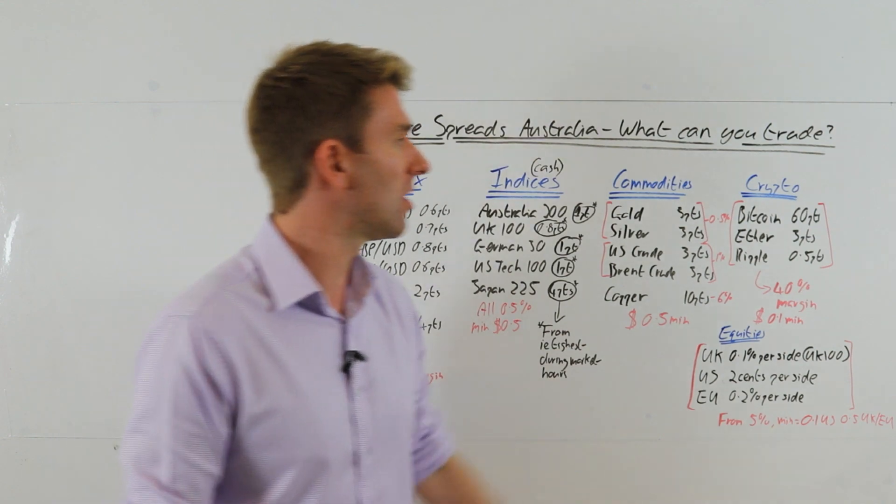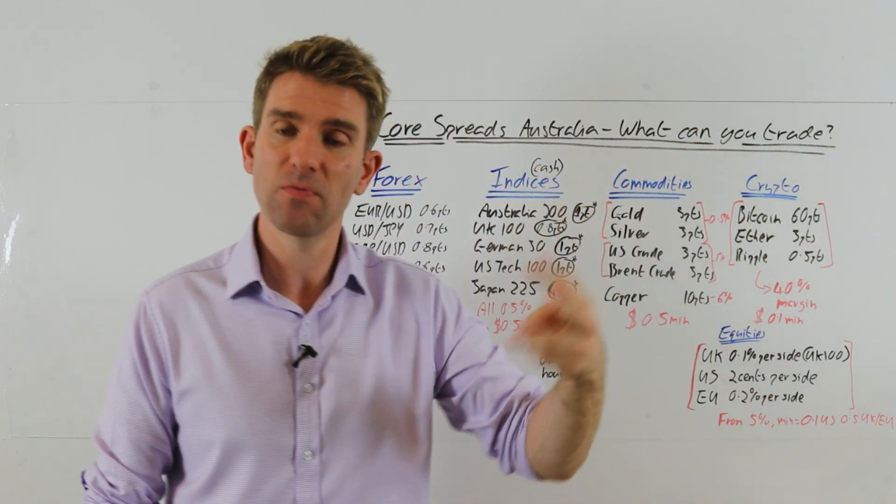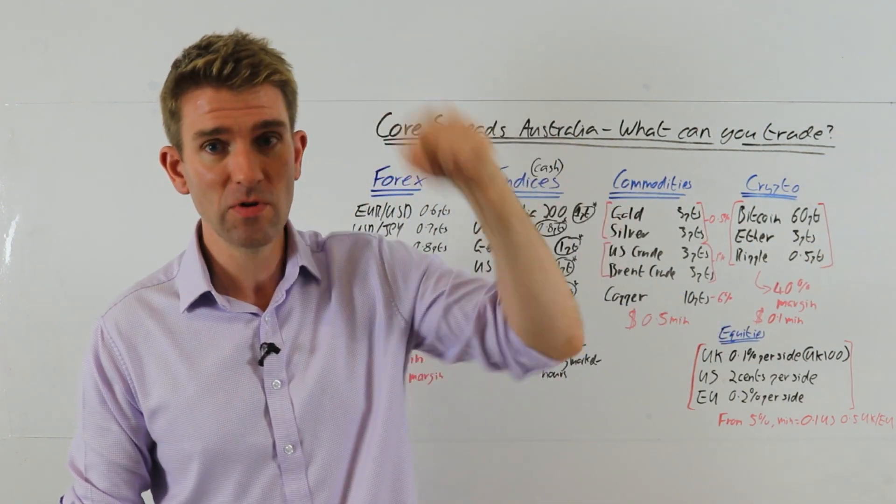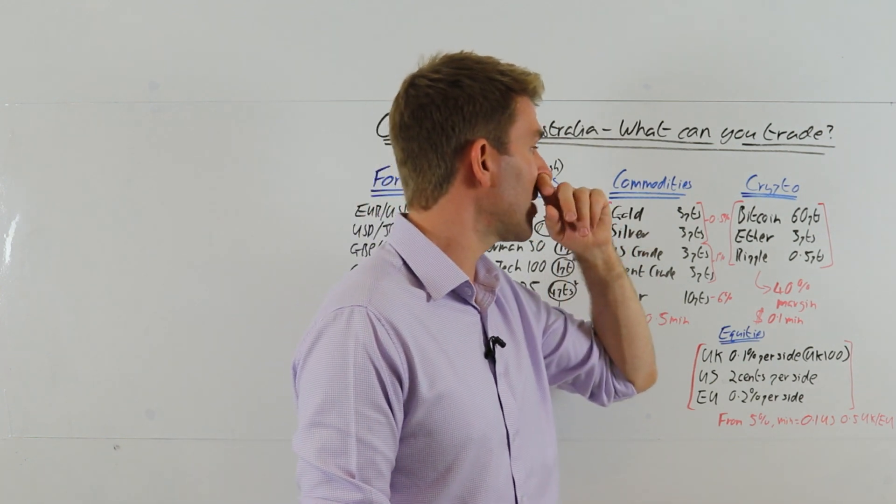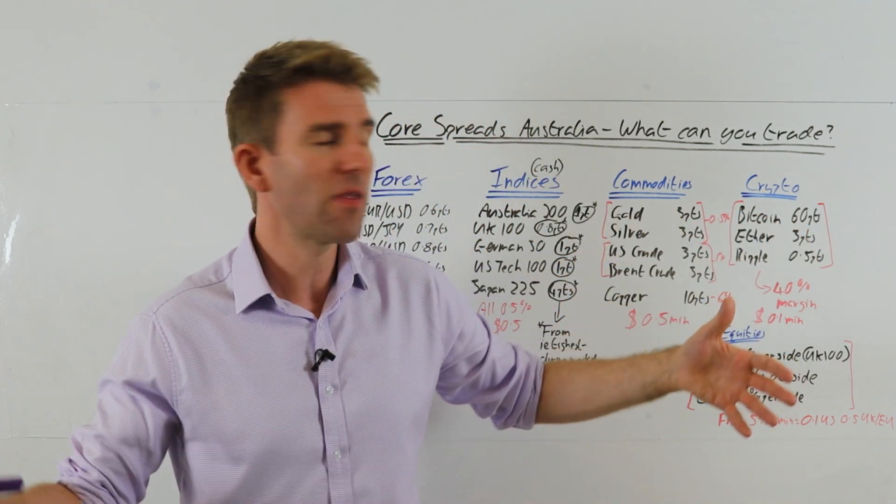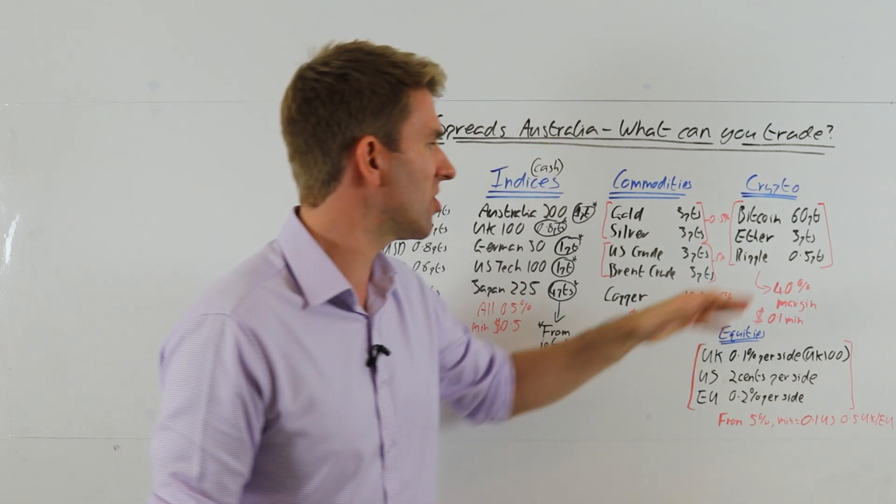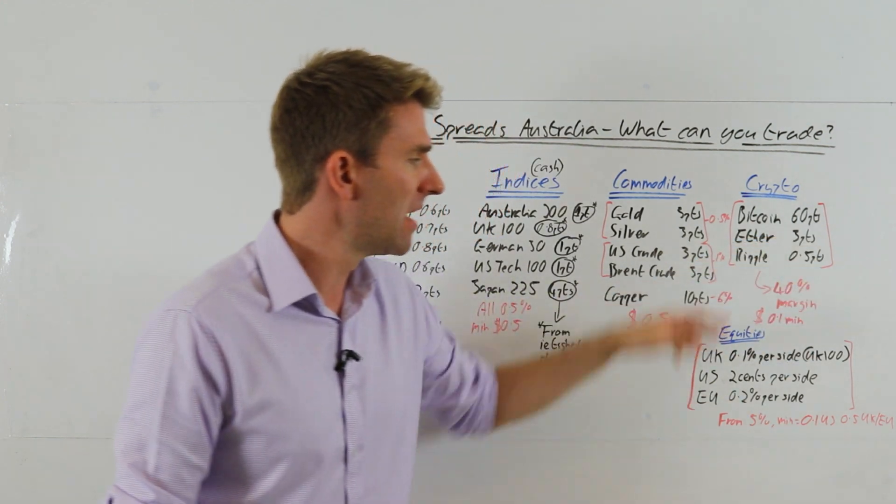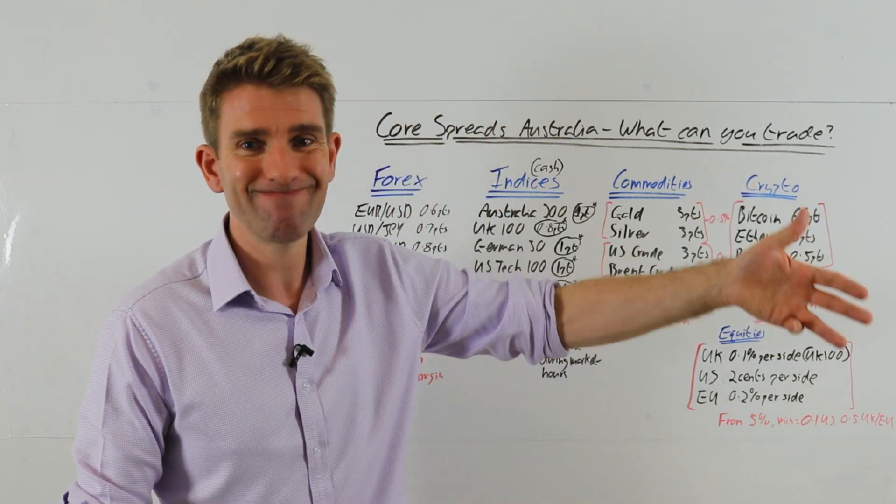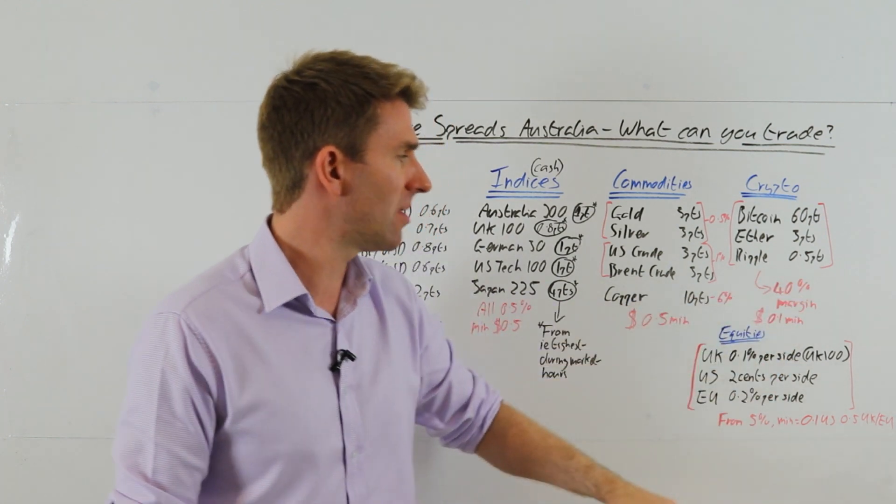Crypto: they offer three cryptos at the moment. Might do more - if you like trading crypto go and check them out, they might add some more by the time you watch this. Bitcoin: 60 points, big swinger though, so again look at that spread-to-range ratio. Ether: 3 points. Ripple: half a point. 40% margin on those - you understand why, guys, you have to put some money up if you want to trade your cryptos. But the minimum is less at 0.1 dollars, 10 cents.